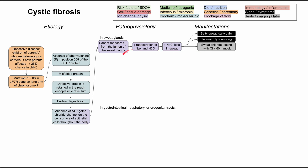For the pathophysiology in the sweat glands, keep in mind that chloride, sodium, and H₂O all travel together, and you're not able to reabsorb chloride from the lumen. The opposite is true in the GI, respiratory, and urogenital tracts. In those cases, you're not able to transport intracellular chloride across the cell membrane into the lumen — it's kind of reversed.